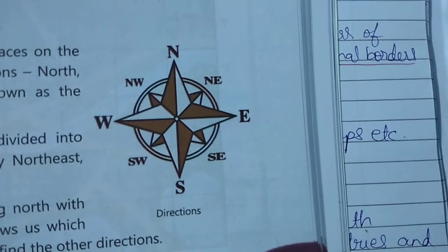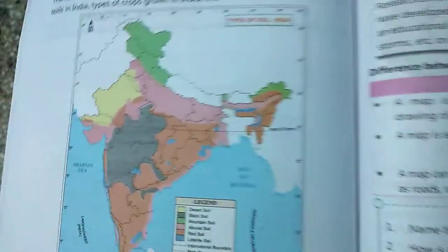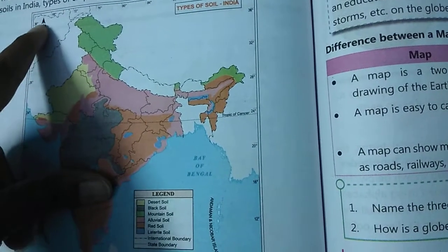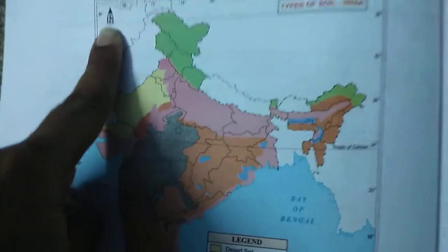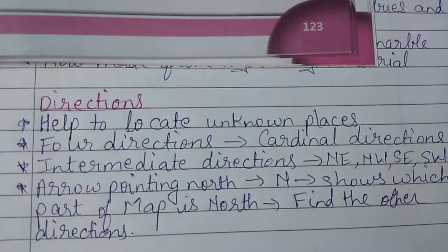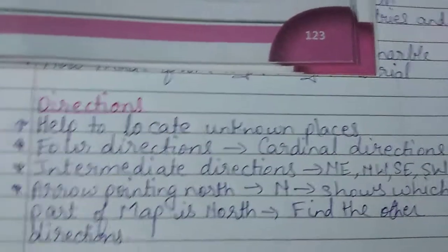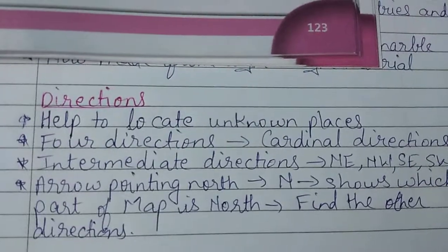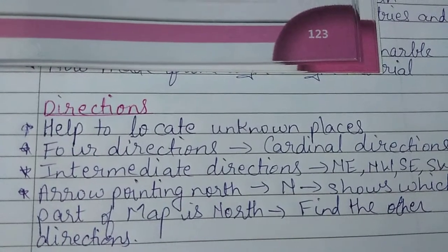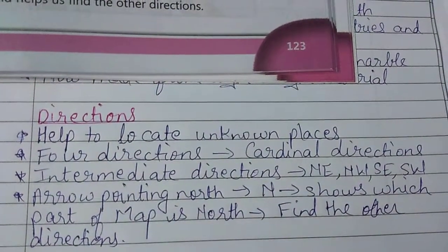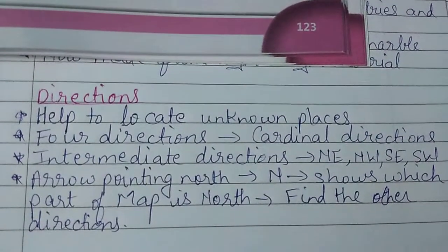In a map, you will always see an arrow pointing north. In this map, you can see the arrow with 'N' written on it. When an arrow is pointing towards north, that means that part of the map is north. Once you know the north direction, the other directions are easy to follow. This is how the map has an arrow pointing north, which shows which part of the map is north, and then the other directions are easily findable.